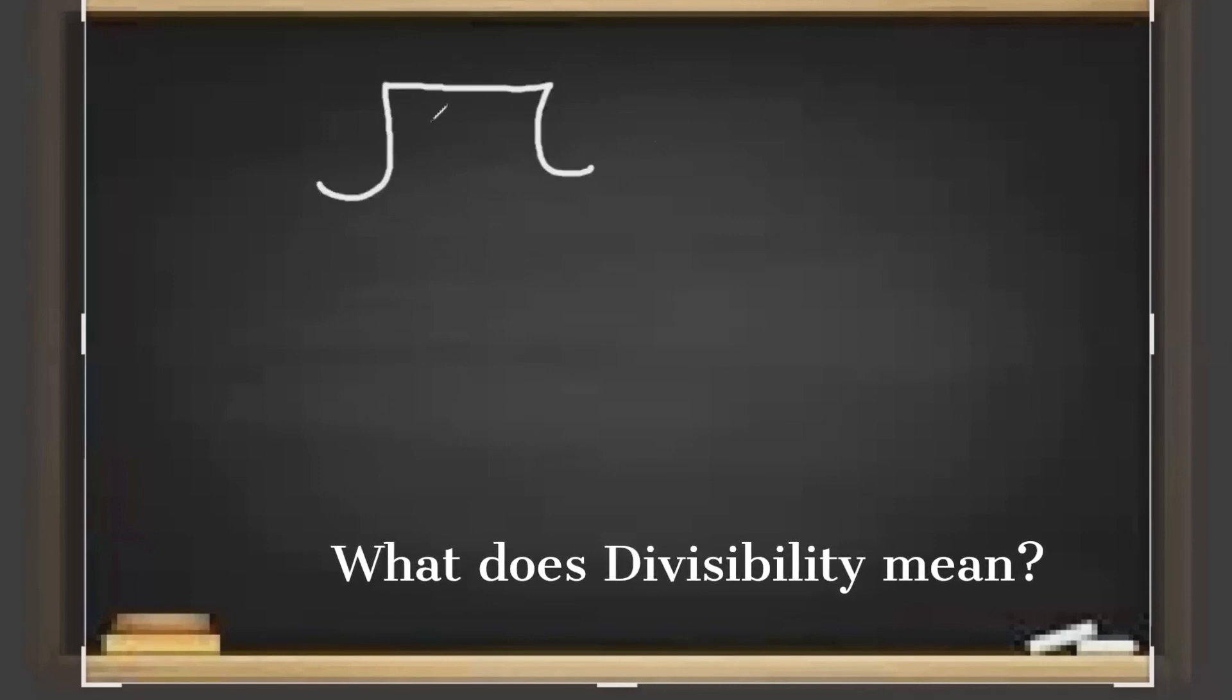If we divide a number with a divisor, we should always get remainder equals to 0. For example, if I divide 132 by 4, the remainder will be 0. That means 132 is divisible by 4.